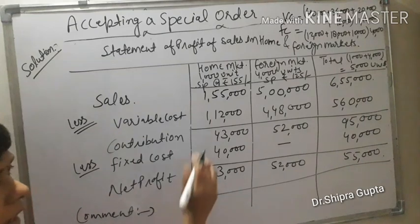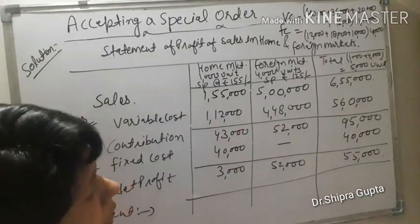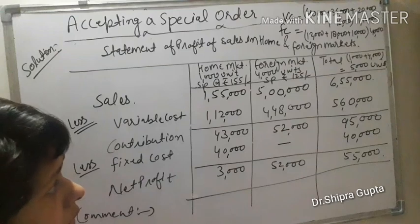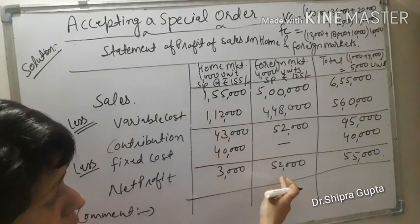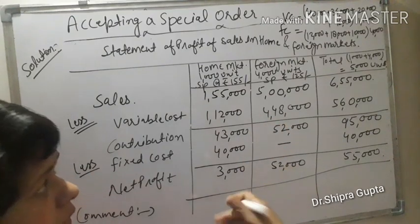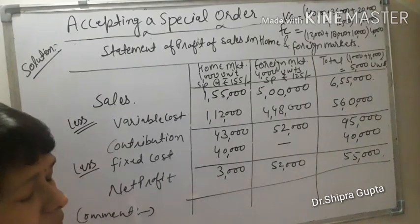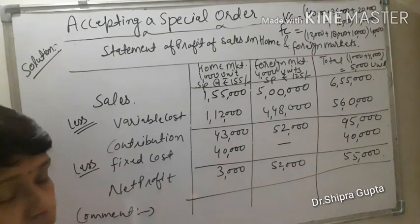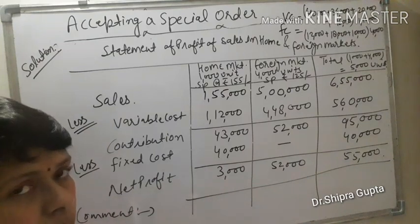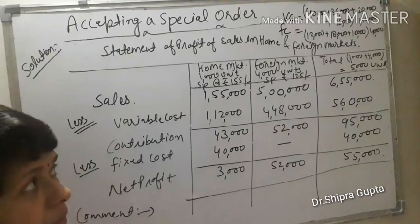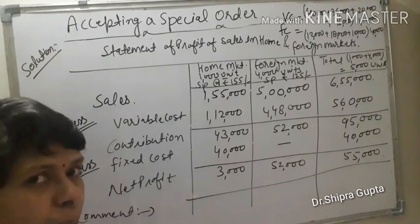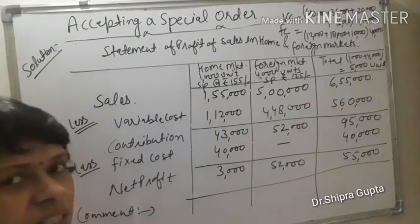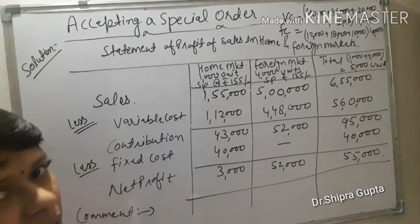As per the above table, if we sell 4000 units in the foreign market, our profit will increase by ₹52,000, and home market profit is ₹3,000, giving total profit of ₹55,000. Therefore, we should accept this proposal. This comment is mandatory to write in the answer. If you have faced any problem, you can ask me. Thank you.